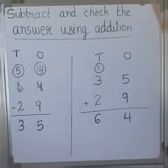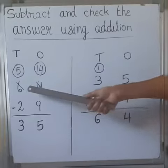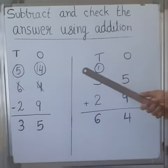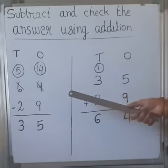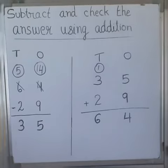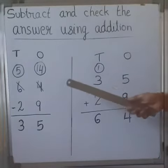Here we are going to subtract 29 from 64. After that we will check the answer using addition to make sure the answer is correct. Now we will do subtraction first.